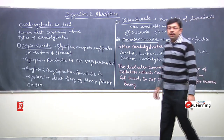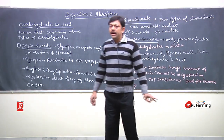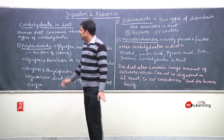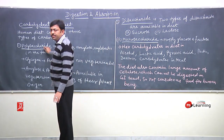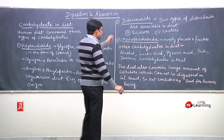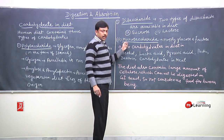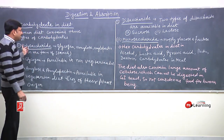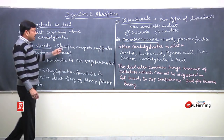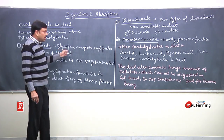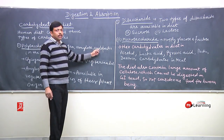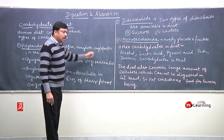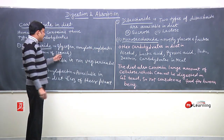We have three types of carbohydrates. These are polysaccharides, disaccharides, and monosaccharides. Important polysaccharides in our diet are glycogen, amylose, and amylopectin — amylose and amylopectin are in the form of starch. Glycogen is found in non-vegetarian diet.